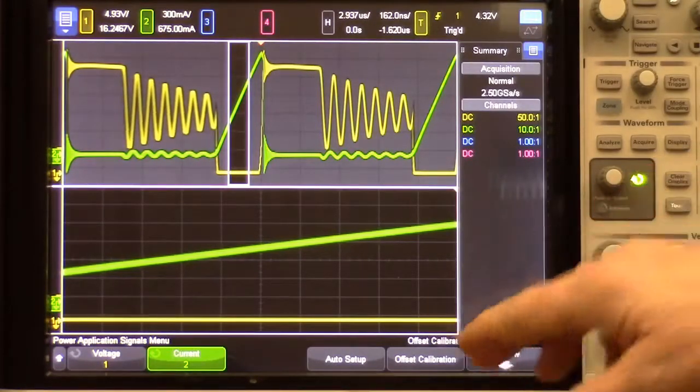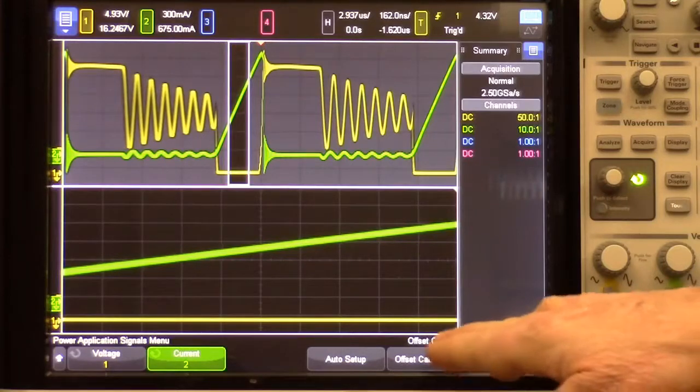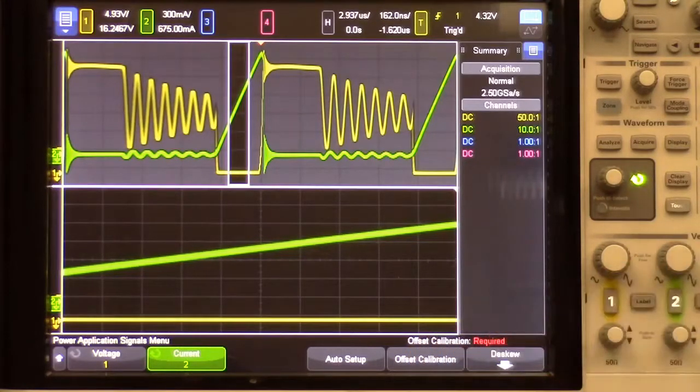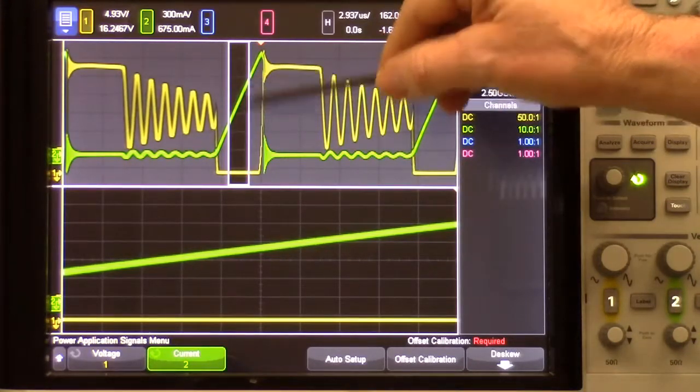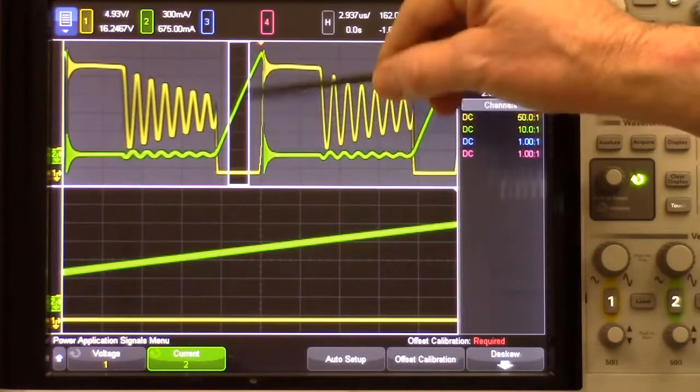We're almost ready to make a measurement. But another very important thing to do, notice down here, it says offset calibration required. To measure RDS-ON, we need to know the average current and the average voltage during this phase.